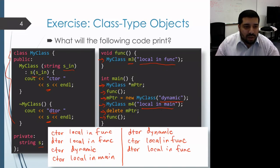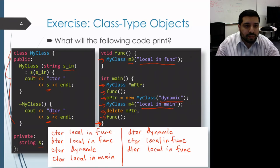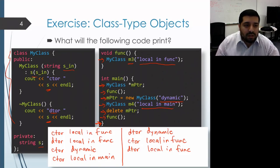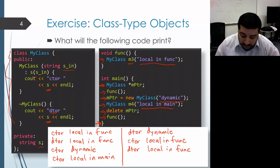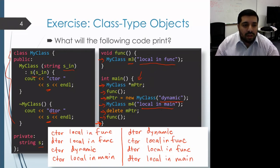Execution returns back to main and we hit the end of main, which causes the local objects inside main to be reclaimed — their lifetimes end. They get reclaimed in reverse order of construction. The most recent thing constructed was the m4 local object, which is of class type, so its destructor runs and we get DTOR local in main. After that, the m_pointer object gets reclaimed as well, but it's not of class type, so no destructor is invoked. Then the activation record for main goes away.